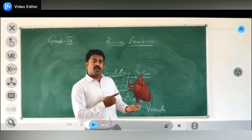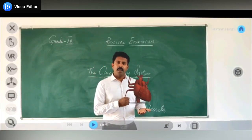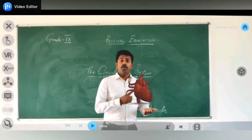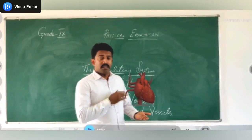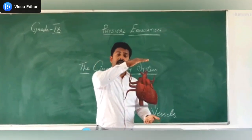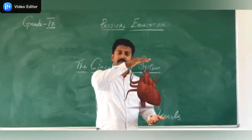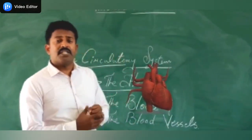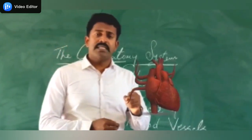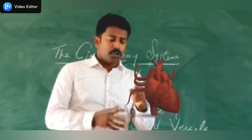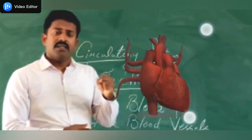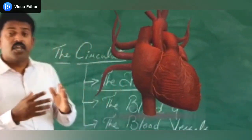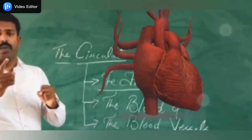The heart is present between the two lungs, towards the little left. The heart is one of the vital organs of our body. It helps us in circulating blood to all parts of the body. The length of the heart is ten centimeters, and the size depends upon the individual's